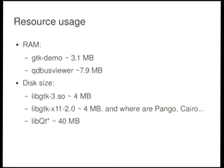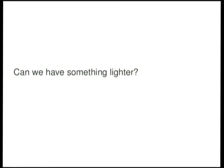Let me show some size comparisons. For example, a plain GTK demo is using this amount of memory, or QDBusViewer, which is a plain Qt application. Now I'm just comparing disk usage here. Some of you will probably say disk is quite cheap today, but if you are going to target embedded devices with, let's say, a micro SD card, this can be a problem. So can we have something lighter?